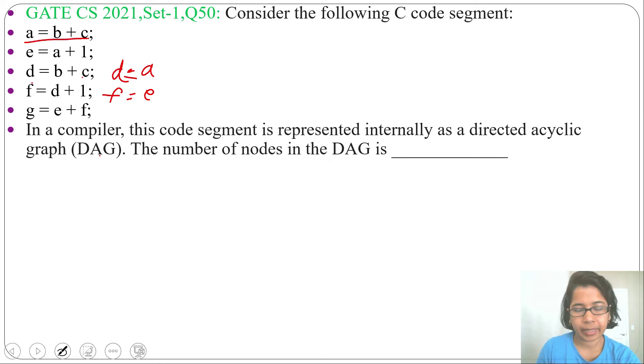First, we'll construct DAG for statement a equals b plus c. Create one node for b, create another node for c, create another node for plus. Now b will be left side of plus while c will be right side, and add label a for this plus node.